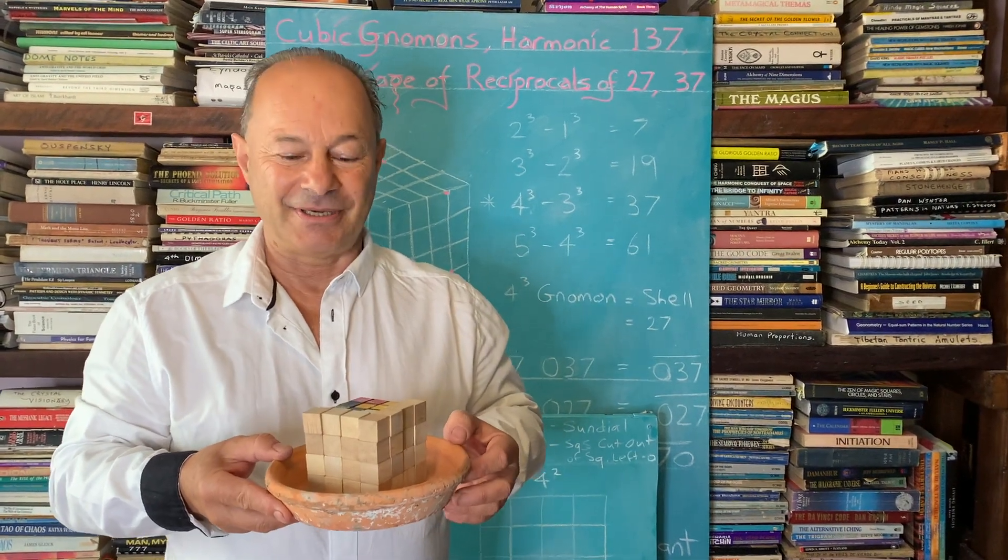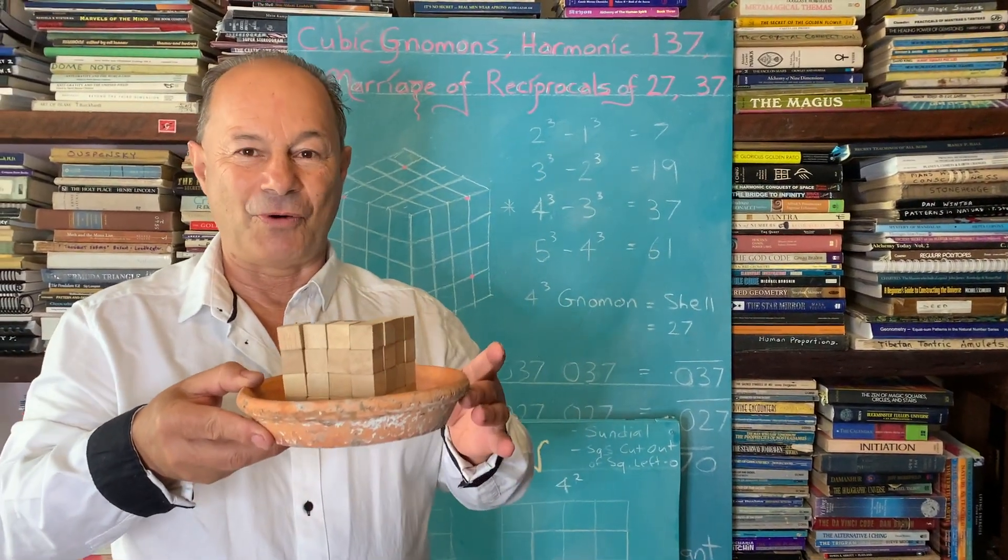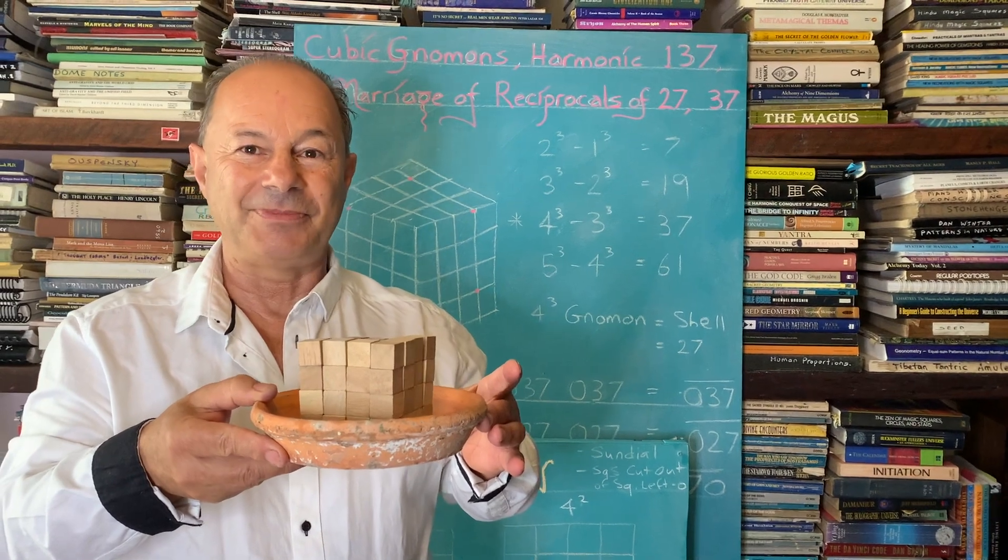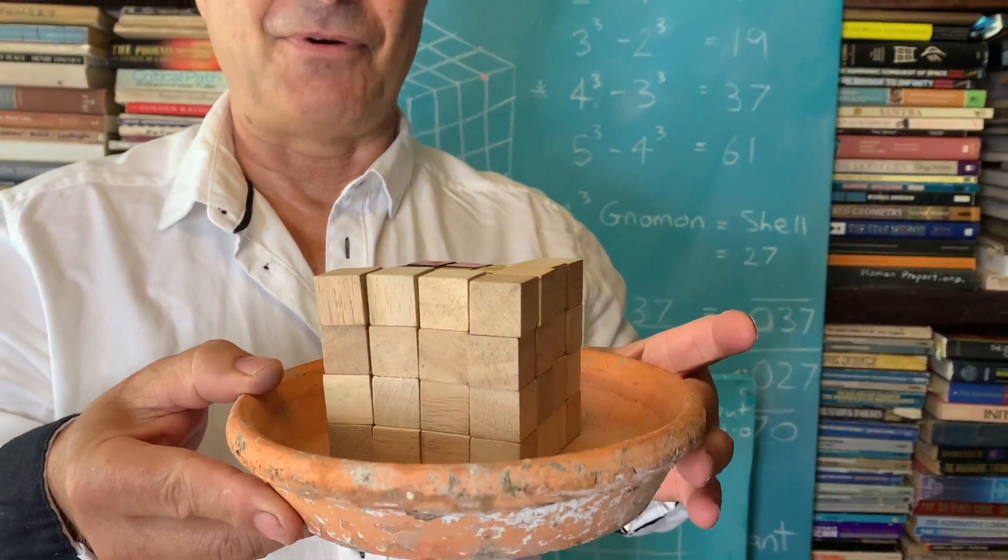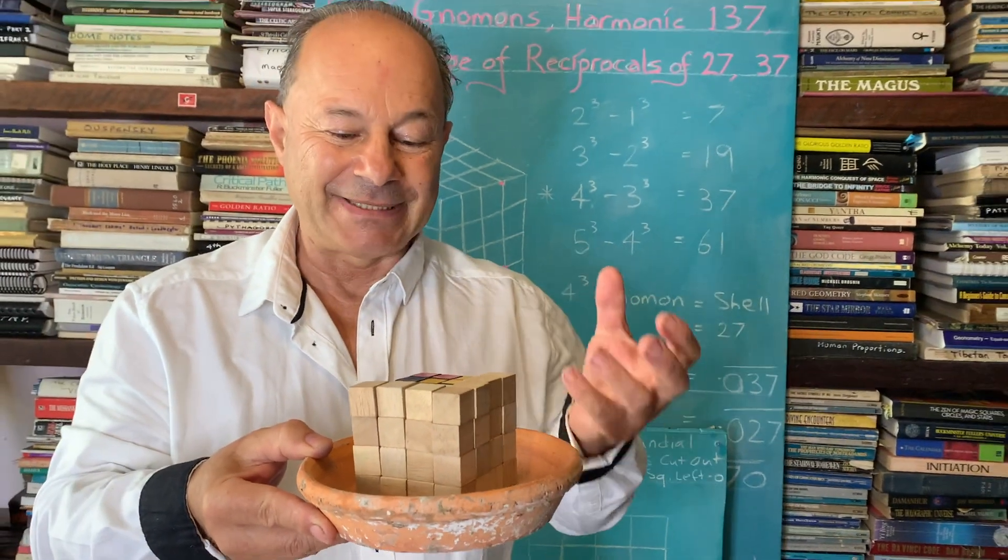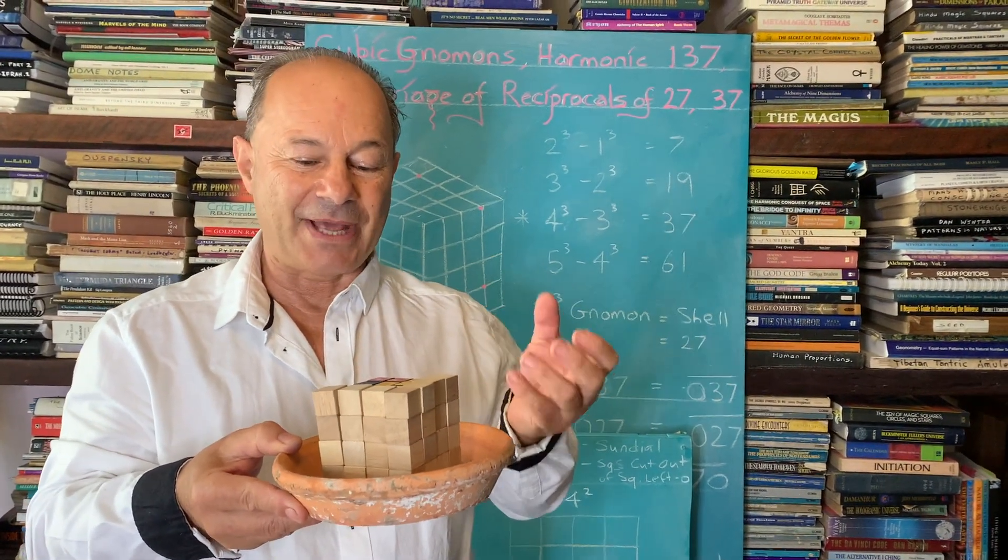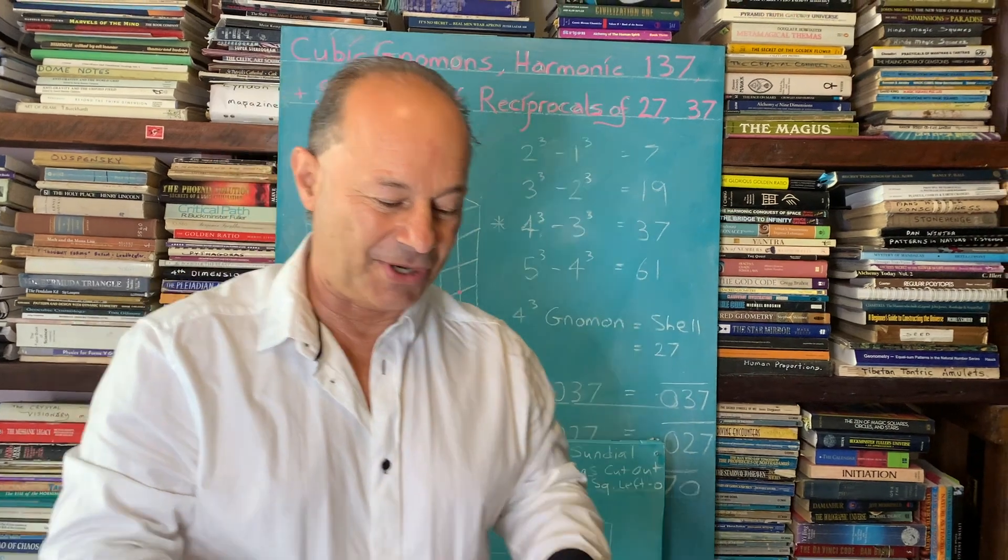This lesson is an investigation into a cubic number called four cubed. You can see that four cubed is four times four times four, which is 64. We're going to basically x-ray, pull it apart and see what are the constituents inside of the four cubed.